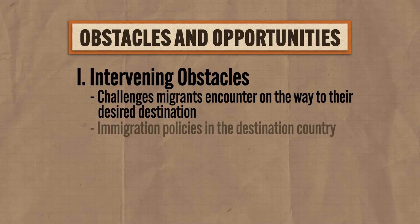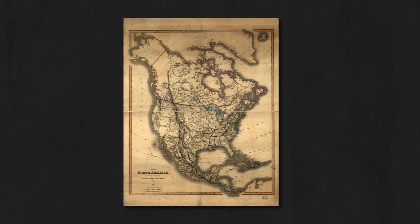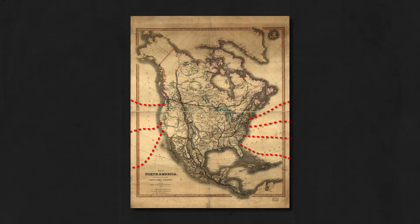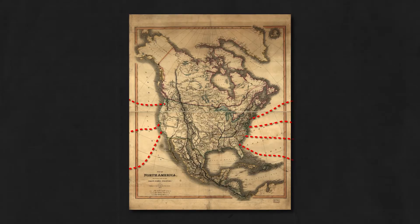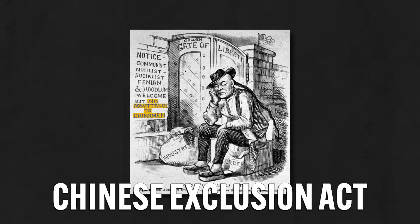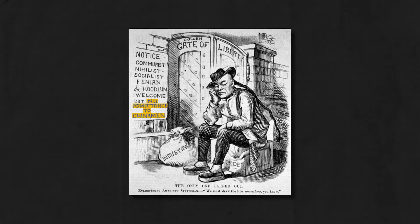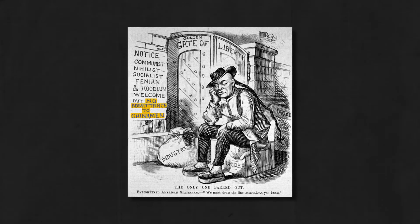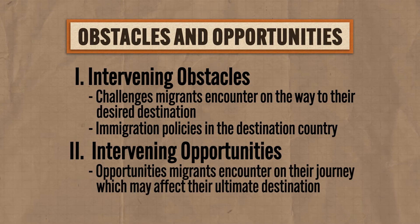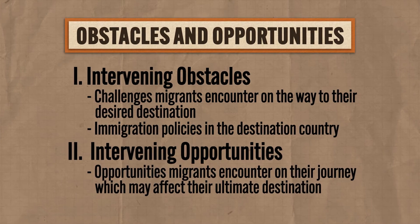Another intervening obstacle is immigration policies in the destination country. The United States has always been a desirable destination, but policies have either allowed or restricted immigration over time. For example, Chinese immigrants to the United States in the second half of the 19th century encountered the Chinese Exclusion Act of 1882, which banned any further Chinese immigration. But it's not all obstacles — migrants also encounter intervening opportunities along their journey, which may affect their ultimate destination.